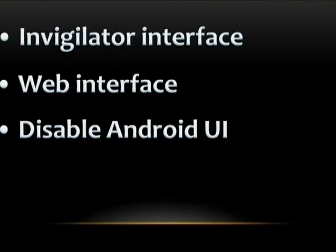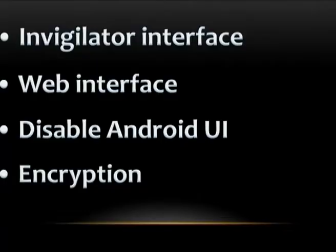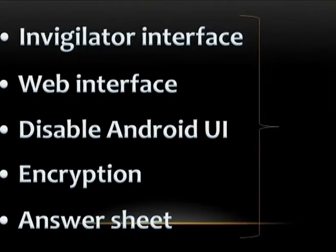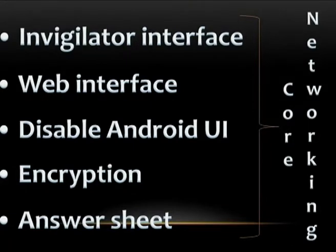The next module is disabling the Android user interface, which has a lot of extraneous stuff that can distract from the exam — a student could exit the app and start browsing Google for answers, so all those things have to be disabled. The next is encryption: the question paper and answers all have to be encrypted when going from the invigilator to the students, so that anyone who tries to snoop in finds only random nonsense in the packets. The last module is the answer sheet where the student actually attempts questions. All these modules are connected through a core networking component which ensures data is transferred effectively and smoothly.